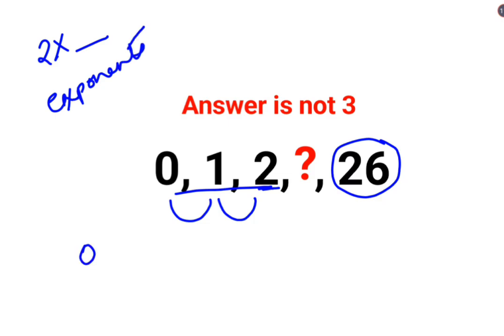So we can say 0 multiplied by 0 plus 1 gets you 1. Similarly 1 multiplied by 1 plus 1 gets you 2.